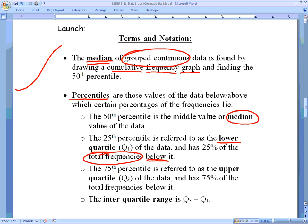The 75th percentile is the upper quartile, meaning if we broke this into quarters, the 75th percentile is the upper quarter, Q₃ of the data, and it has 75% of the total frequencies below it. That's why it's called the 75th percentile. And then finally, interquartile range: you take Q₃ minus Q₁. Again, Q₃ was the 75th percentile and we subtract the 25th percentile.